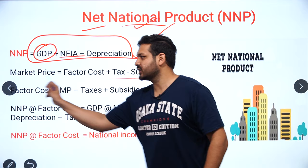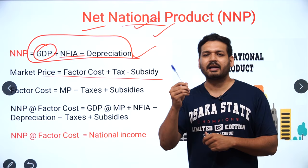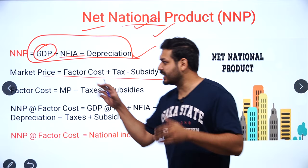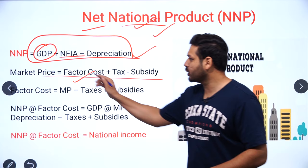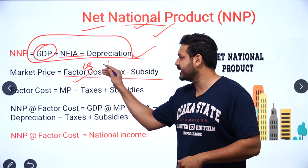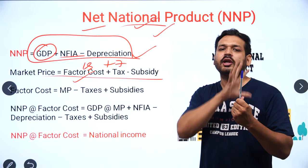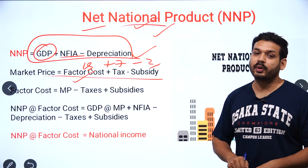One more thing — Market Price versus Factor Cost. Suppose the market price of a pen is 20 rupees. Market price equals factor cost plus taxes minus subsidies. For example, factor cost is 15 rupees, taxes are 7 rupees, and the government gives a 2 rupee subsidy. So: 15 plus 7 minus 2 equals 20 rupees — that is the market price.